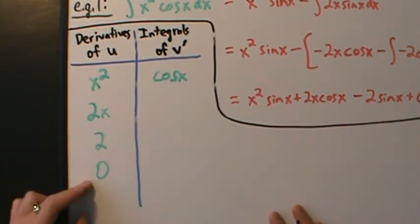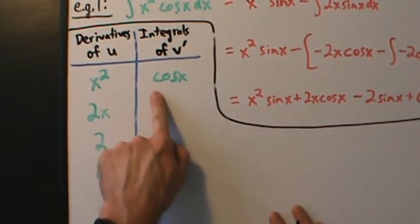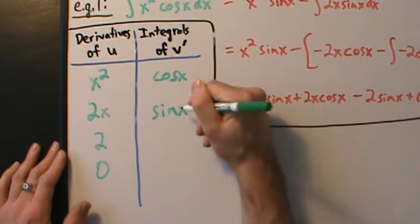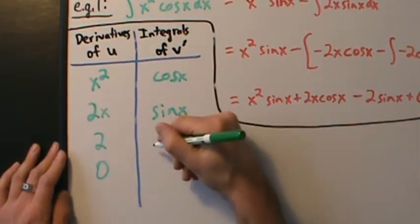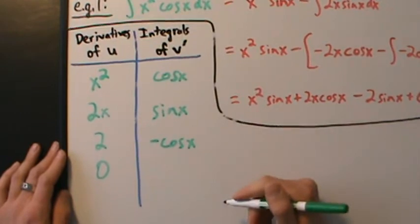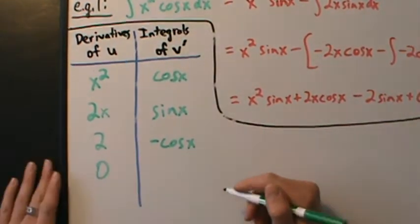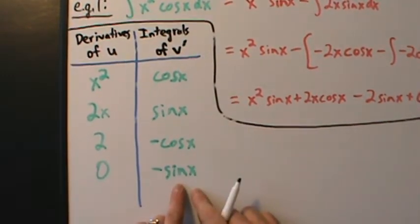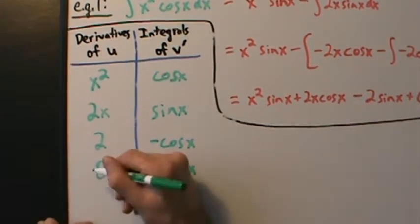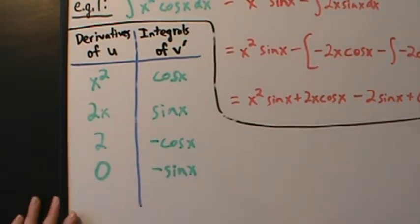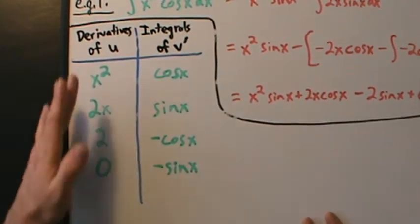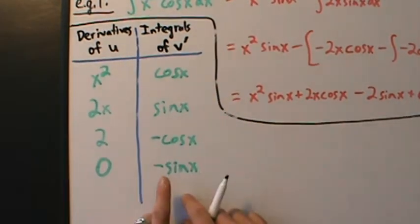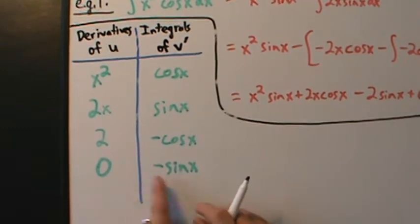The integral of cosine of x is sine of x. The integral of sine of x is negative cosine of x. The integral of negative cosine of x is negative sine of x. We stop here because we hit the same row with the 0. That's what we always do with tabular integration — stop the integrals once you reach that same row.